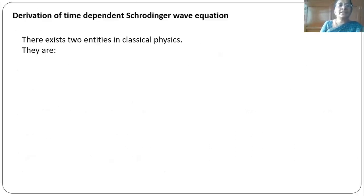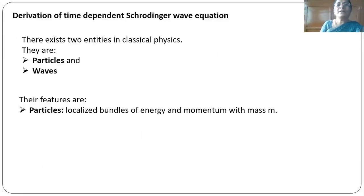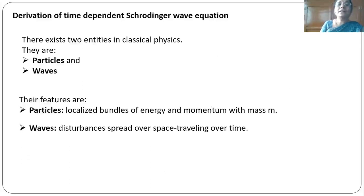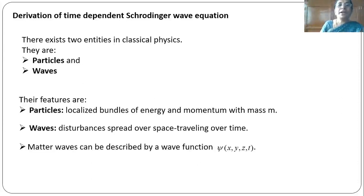In classical physics, there exist two entities. Things in the universe exist in two forms: particles and waves. Particles are localized bundles of energy and momentum with a mass. Waves are disturbances that spread over space and travel over time. Matter waves can be described by a wave function psi of x, y, z and time t.